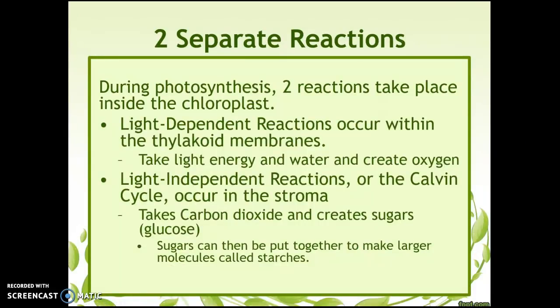Although we show photosynthesis like it's one giant reaction, it's actually two separate reactions inside the chloroplast. The light-dependent reactions occur within the thylakoid membranes — they take the light energy collected by the chlorophyll and water, and create oxygen. The light-independent reactions, also called the Calvin cycle, occur in the stroma and take carbon dioxide to create sugars or glucose.